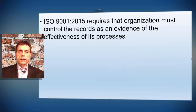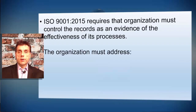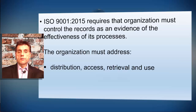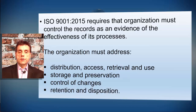ISO 9001-2015 standard requires that an organization must control the records as evidence of the effectiveness of its processes. The organization must address the following: distribution, access and retrieval and use, storage and preservation, control of changes, and retention and disposition.